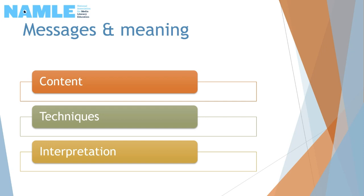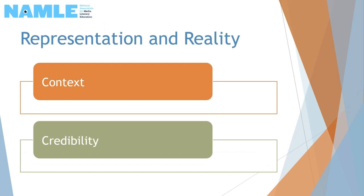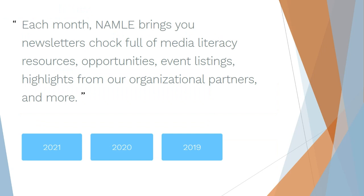What is my interpretation and what do I learn about myself from my interpretation? The last category, representation and reality, talks about context and credibility. When was this made and where or how was it shared with the public? Is it fact, opinion, or something else? Is it credible? Can I trust this source? And what are the sources of information, ideas, or assertions?